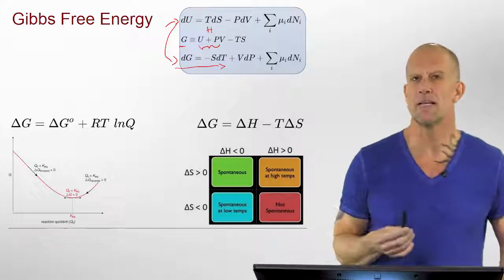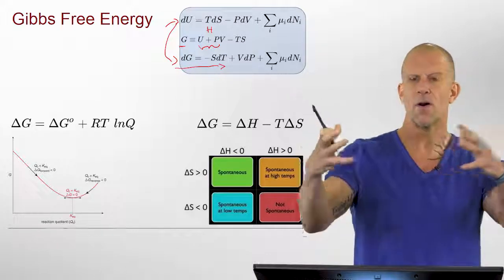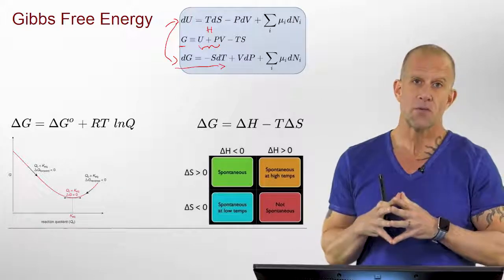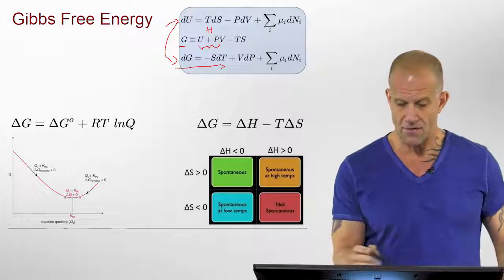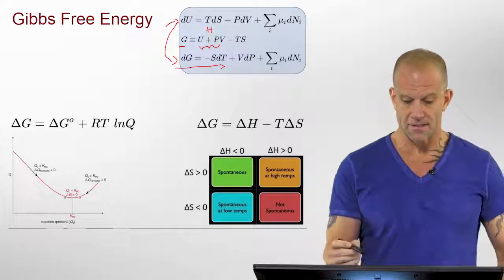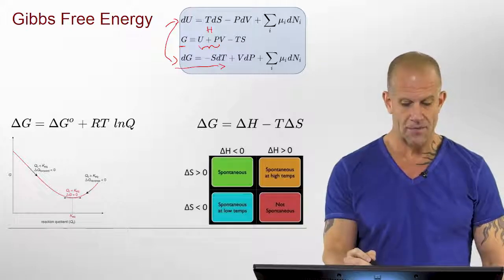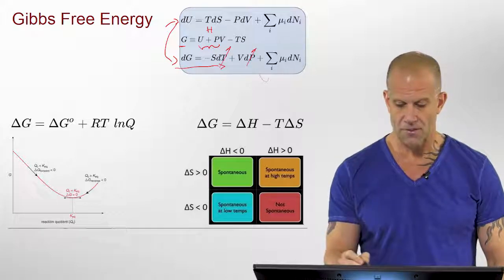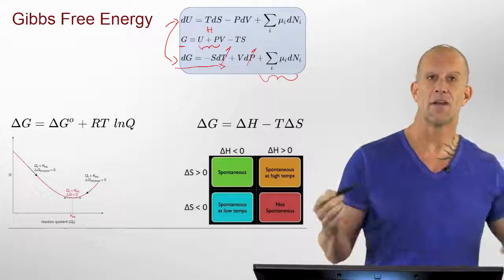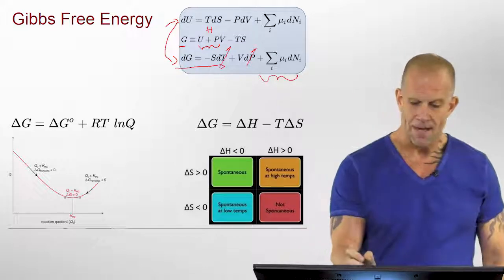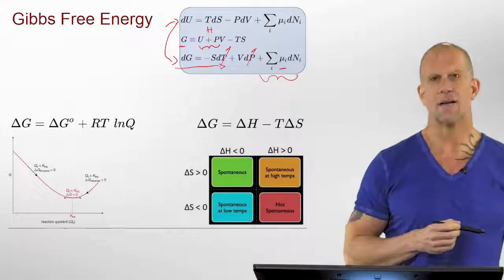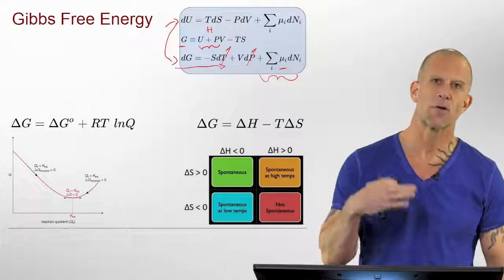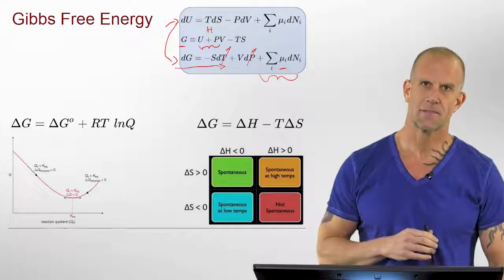This is typically the starting point for getting the Gibbs energy in a form that we use, but it's rarely the form we use itself. Most commonly we'll do things at constant temperature and pressure and look at how the number of moles are changing. And today we're really going to get a better handle on this parameter — the chemical potential of the system.